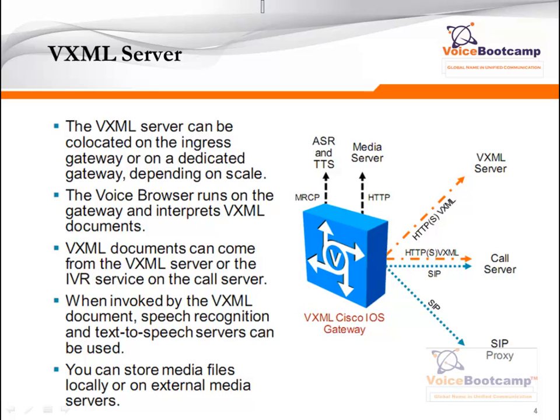A VXML gateway can be co-located on the Ingress Gateway or on a dedicated gateway, depending on the scale. For a small deployment, you can use the same gateway as Ingress or Egress, but for a large deployment it is recommended to have a separate router acting as the VXML gateway. The VXML gateway, which is a Cisco IOS router, runs the voice browser on the gateway and interprets VXML documents, which can come from the VXML server or IVR services on the call server.